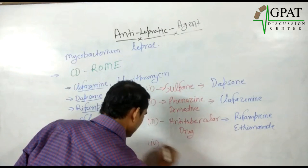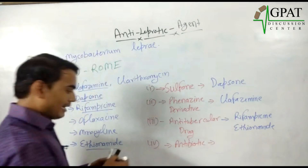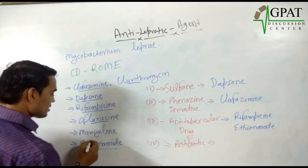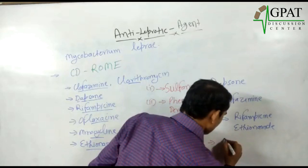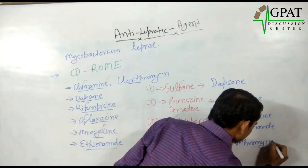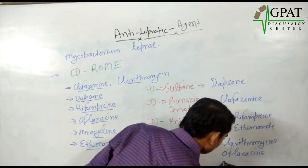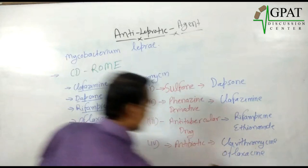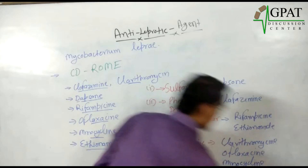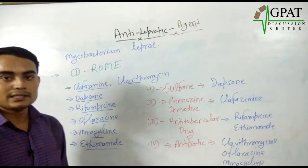The fourth class is antibiotics. The antibiotics included here are Clarithromycin, Ofloxacin, and Minocycline. So these are the drugs used in the treatment of leprosy and are called anti-leprotic agents. Thank you.